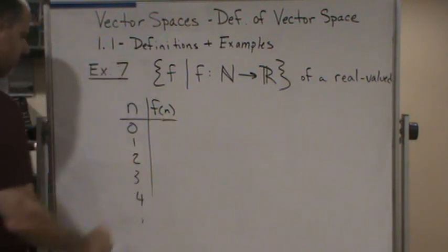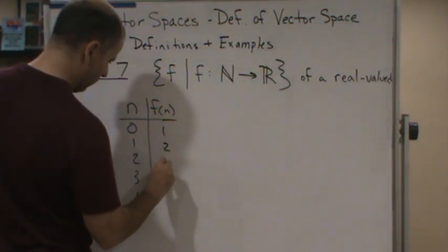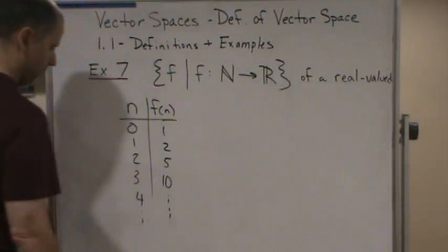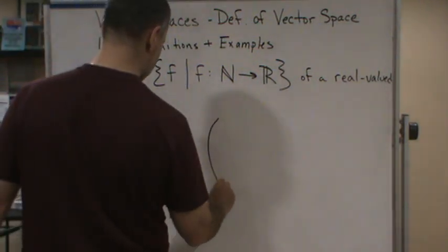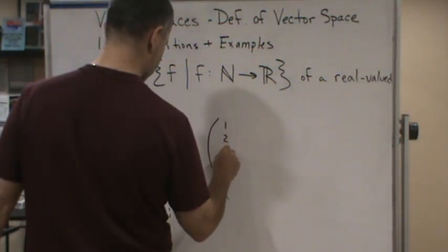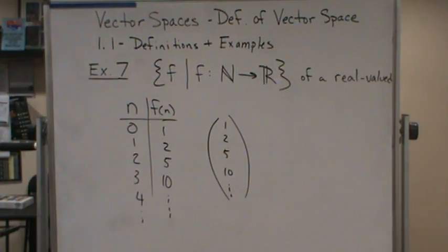And then f(n) would be what? 1, 2, 5, 10, and so on. And so this would correspond to that vector, so this would be an infinitely tall vector. So these functions, like I said, are like infinitely tall vectors.